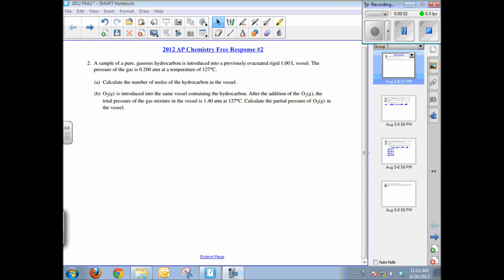This video tutorial will help solve free response question number two from the 2012 AP chemistry exam. Let's read through the question. A sample of a pure gaseous hydrocarbon is introduced to a previously evacuated rigid one liter vessel. The pressure of the gas is 0.2 atmospheres at a temperature of 127 degrees Celsius.